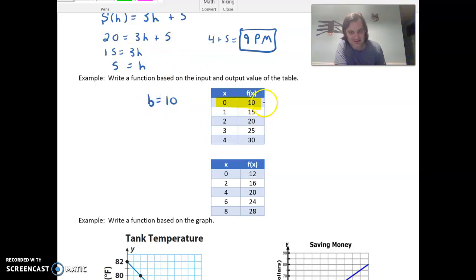And then if we start looking at the change here, first of all, it's important that x is going up by 1. But as x goes up by 1, f of x, or the output, goes up by 5. So that means m would be 5. It goes up by 5 each time. So the function here, we'll just call it f of x, since that's the way it's labeled, equals 5x plus 10. And you should be able to go back and plug these x values in and get the y values that go with them.